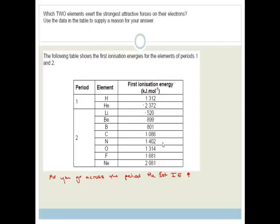It says, which two elements exert the strongest attractive forces on the electrons? Use the data in the table to supply the reason for your answer. Ionization energy is the energy that you need to become an ion. So, basically, you need to be able to lose an electron to become this anion. I would say that helium and neon have got the strongest attractive force on the electrons. Why? Because they've got the highest first ionization energy. That is the energy required to remove the first electron off that atom. And why? Because they're stable. They're noble gases. They don't want to lose electrons.